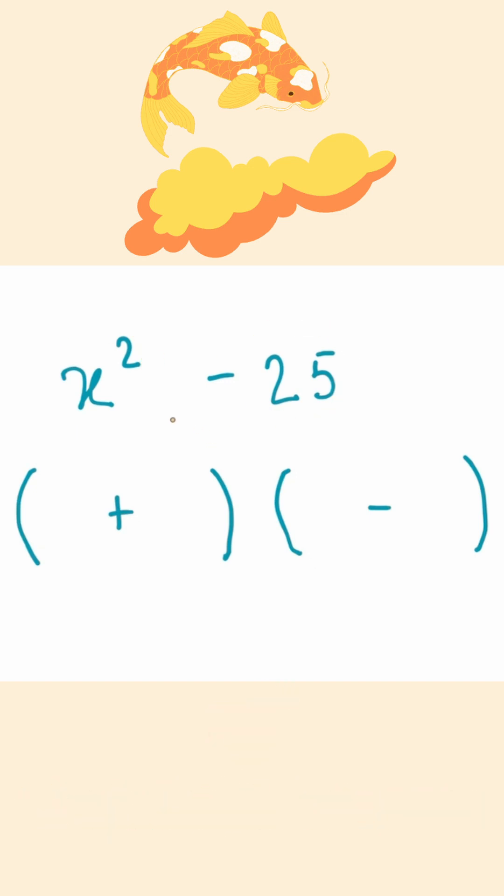So let's go ahead and square root both of these. The square root of x squared gives us x, so that's going to be our first term. The square root of 25 gives us 5, so that will be our second term.